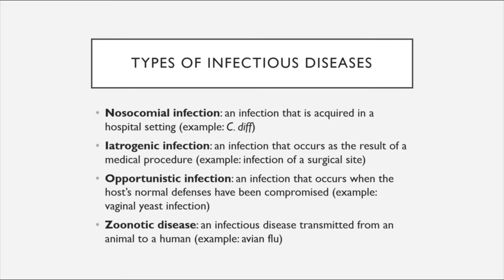Zoonotic diseases are infectious diseases that are transmitted from an animal to a human. For example, the avian flu, also called the bird flu, is an example of a zoonotic disease that normally circulates within the bird population but has been known to be contracted by humans from direct contact with birds.